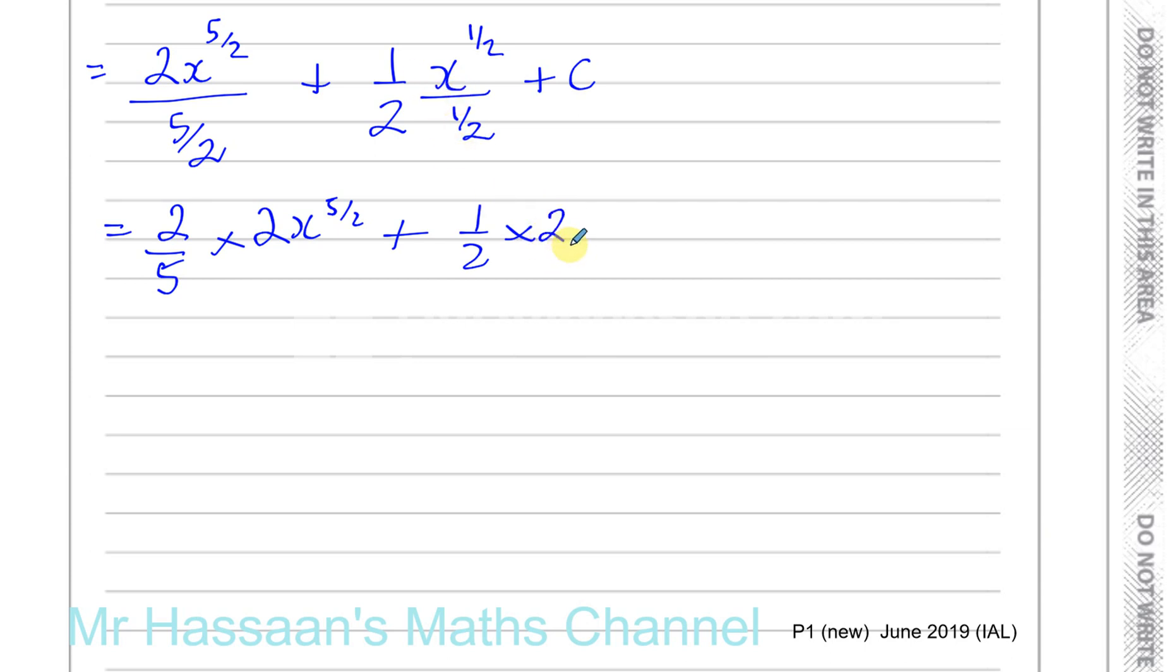These 2's cancel out, that gives you 4 fifths, 4 over 5, x to the power of 5 over 2, plus x to the power of a half, and plus c, and there we have our answer for this question.